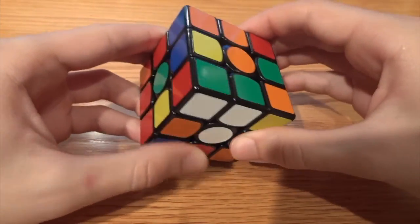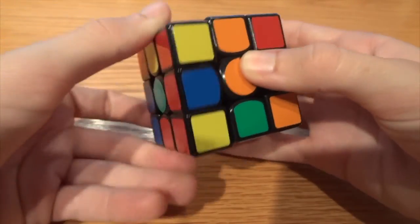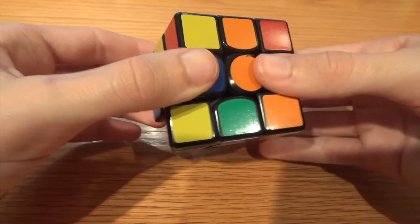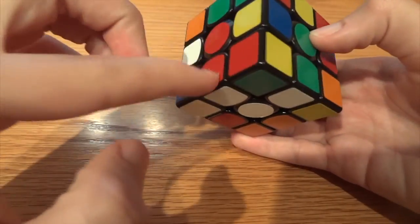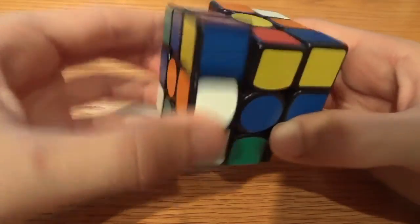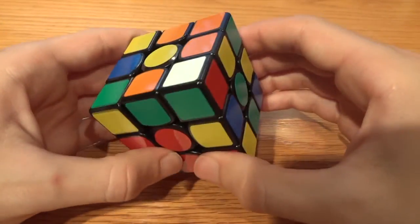So I'm going to put green here and red is going to go here. Because I know that all I have to do is a D prime and that will solve both of them, without destroying my orange guy and my blue guy.